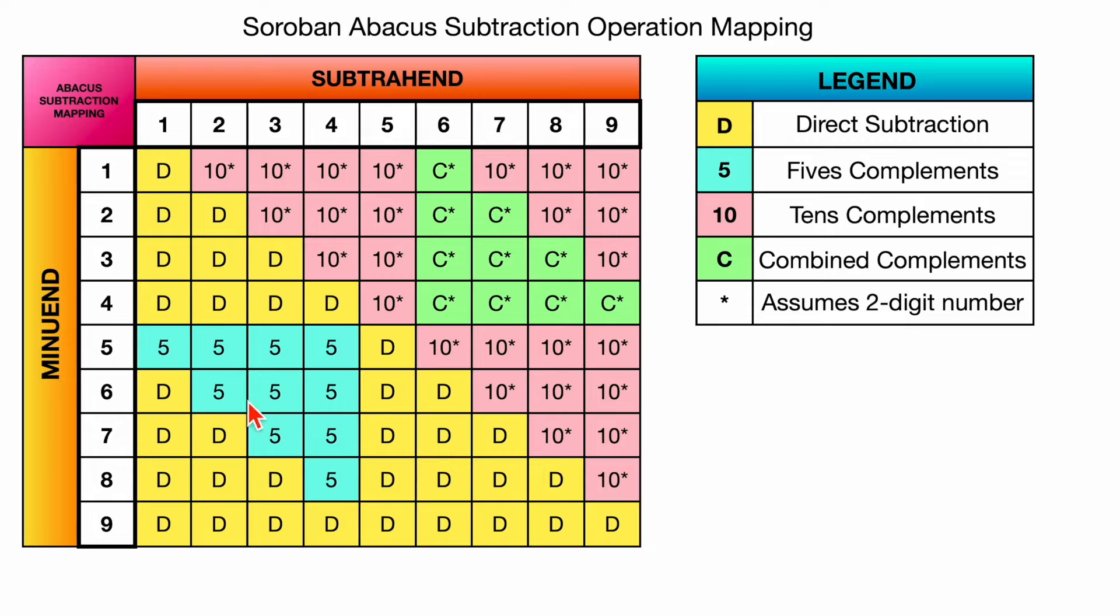And so if you can't directly do a subtraction problem, you have to do a fives complement problem, which is identified in the teal boxes. If you can't do that, you have to do a tens complement number, which is in pink. And you'll notice all of these in the upper right half of the graph are indicated with a asterisk. And this assumes that all of these operations involve two digit numbers, at least because on these boxes, the subtrahend would be larger than the minuend, like one minus five, for instance, we're not going to deal with negative numbers. So we're just assuming there's another column of beads to the left. So you have at least a 10 bead to the left of it.